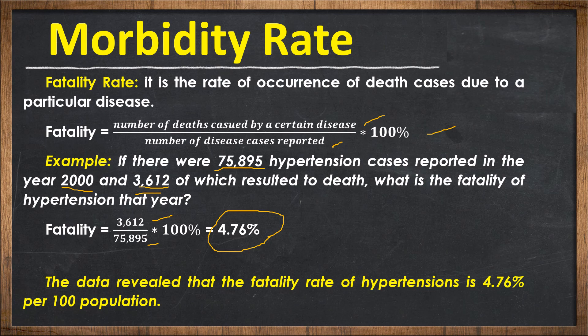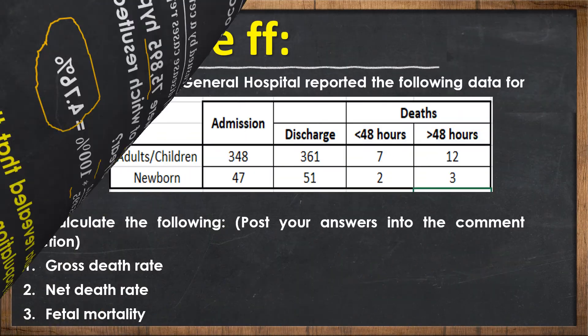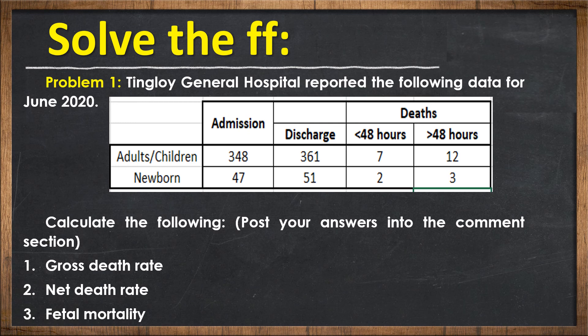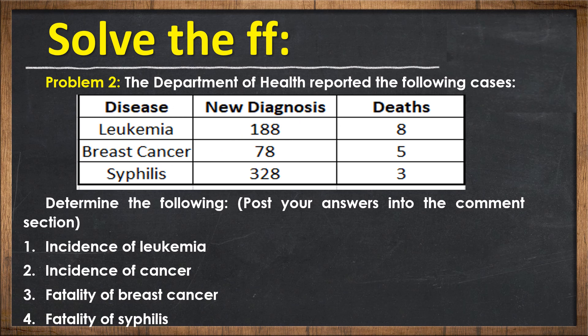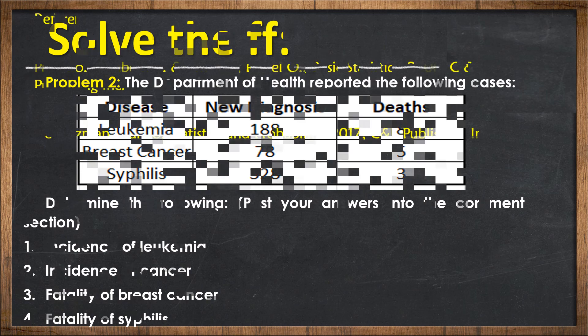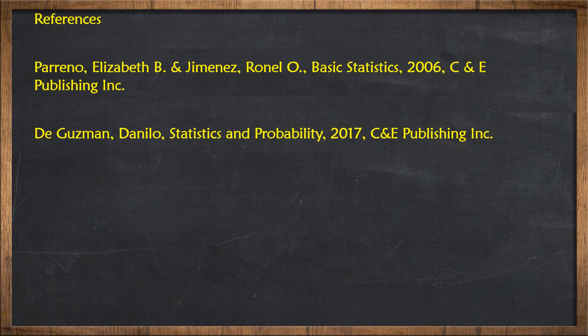That concludes this special topic on healthcare statistics. Now, here is an activity: solve the following problems and post your answers in the comment section. You need to identify the gross death rate, net death rate, and fetal mortality. Also determine the incidence of leukemia, incidence of cancer, fatality of breast cancer, and fatality of syphilis. Good luck! Thank you, and good day everyone.